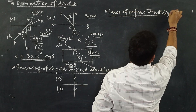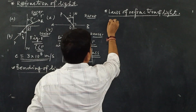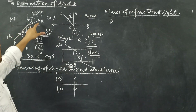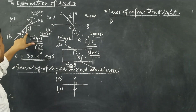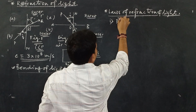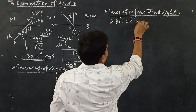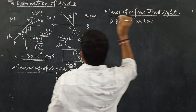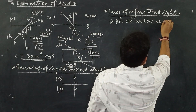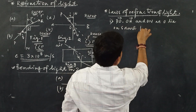The laws of refraction of light: the first law is very similar to the laws of reflection of light. The incident light ray (PO), the refracted light ray (OQ), and the normal drawn at the point of incidence (ON) all lie on the same plane.